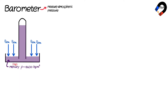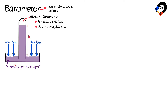it causes the mercury to be pushed downward and rise up the tube. The top part of the tube is a vacuum, which has zero pressure. The height h to which the mercury rises represents the excess pressure of the atmosphere, so atmospheric pressure can be measured as h millimeters of mercury.